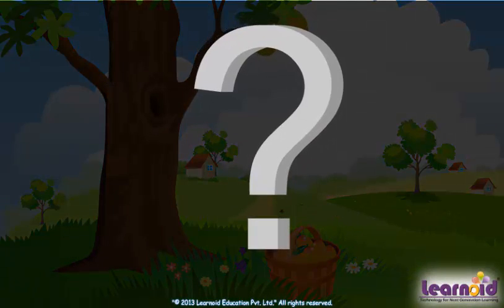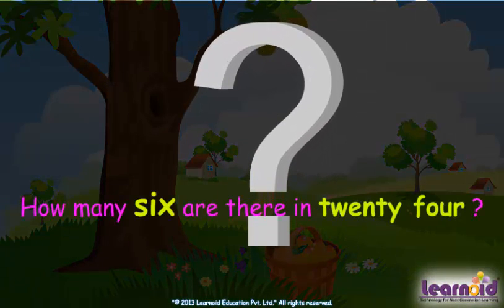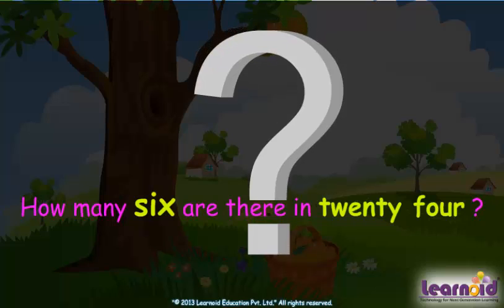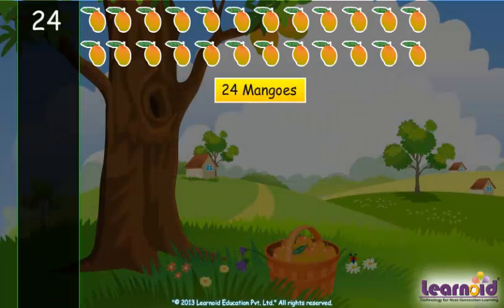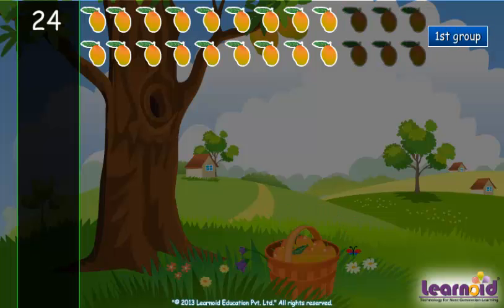We have to check how many sixes are there in 24. These are 24 mangoes. Take away the first group of six mangoes.